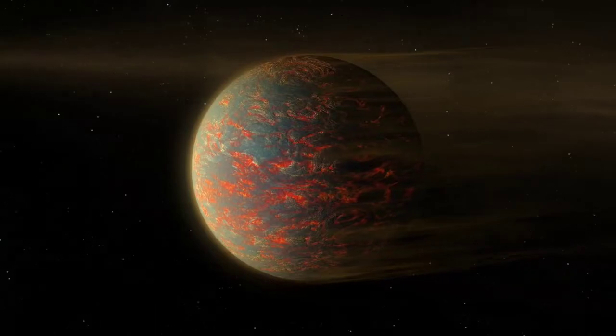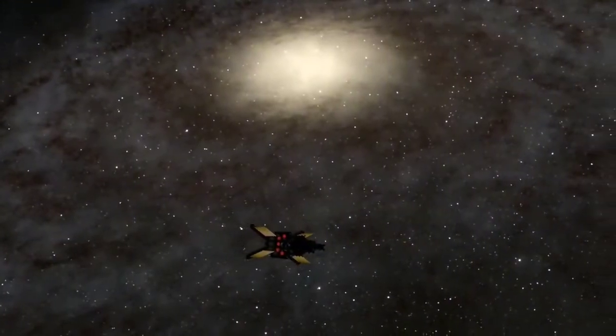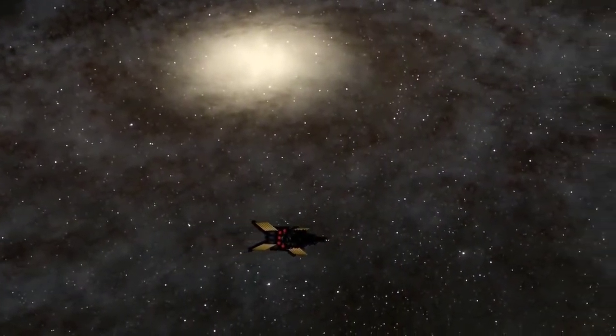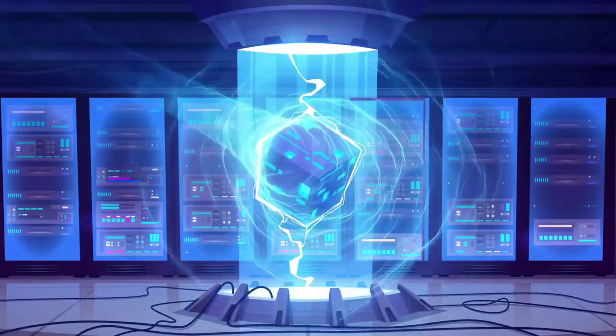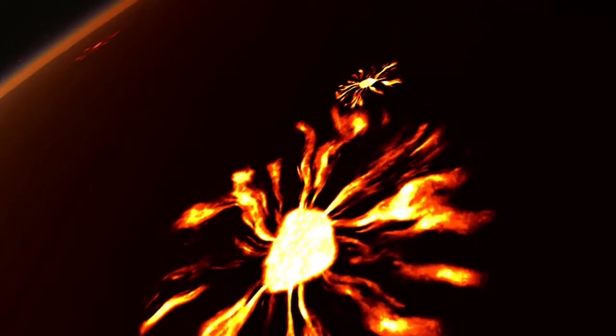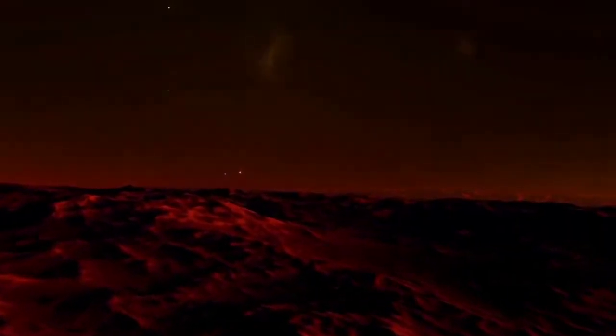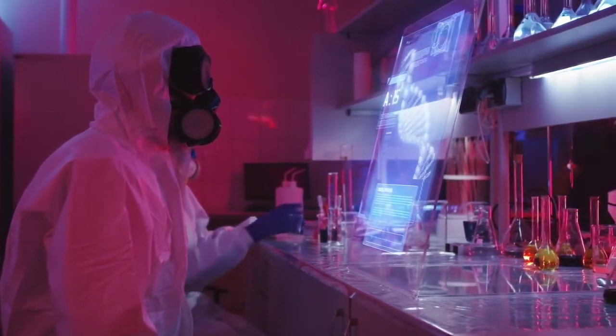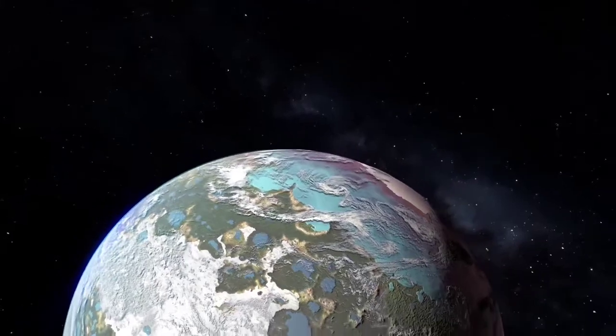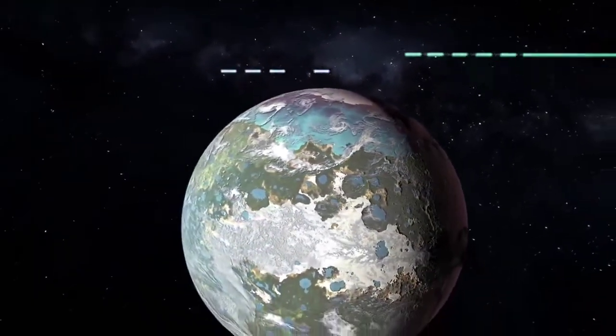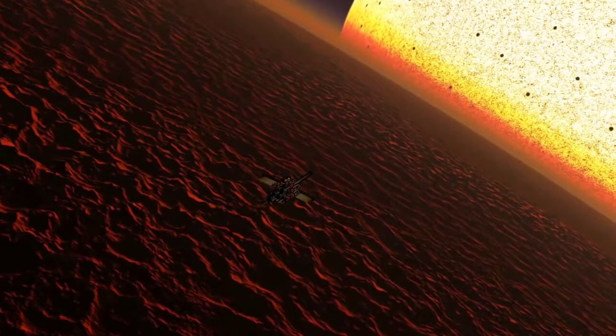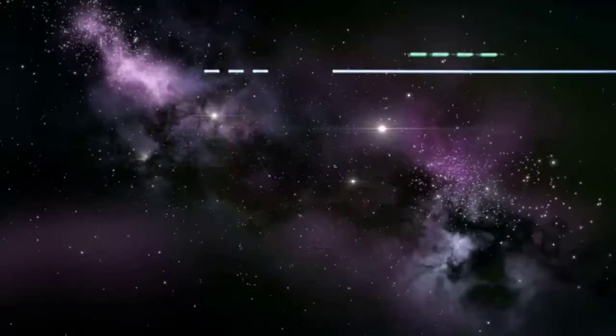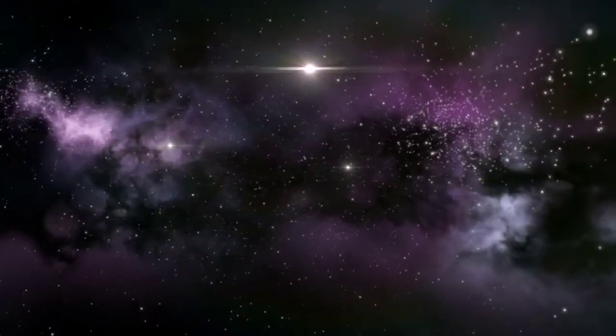The super-Earth 55 Cancri e, also named Janssen after the inventor of the optical telescope, is somewhat of a famous exoplanet. Even though it was originally discovered in 2004, it wasn't until nine years later, in 2016, that its atmosphere was fully understood. The average density of this world is so high that scientists had to conduct multiple studies to explain what could be causing so. Astronomers have considered the planet to be completely covered with oceans or land made of diamonds. However, none of these have proven to be true, as oceans would perish in the extreme heat of the planet.